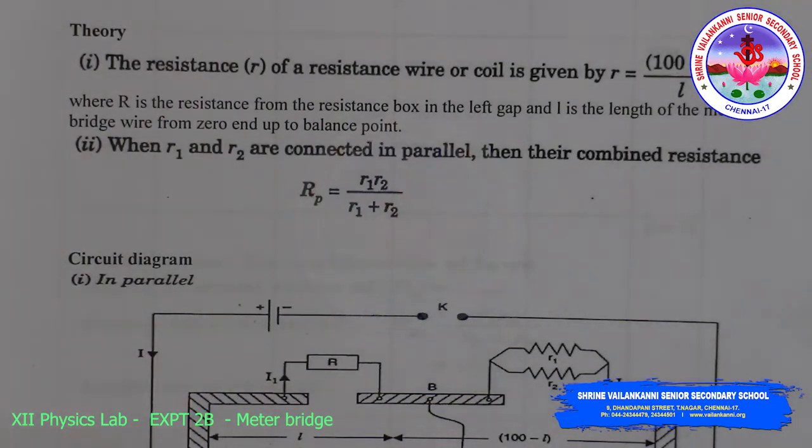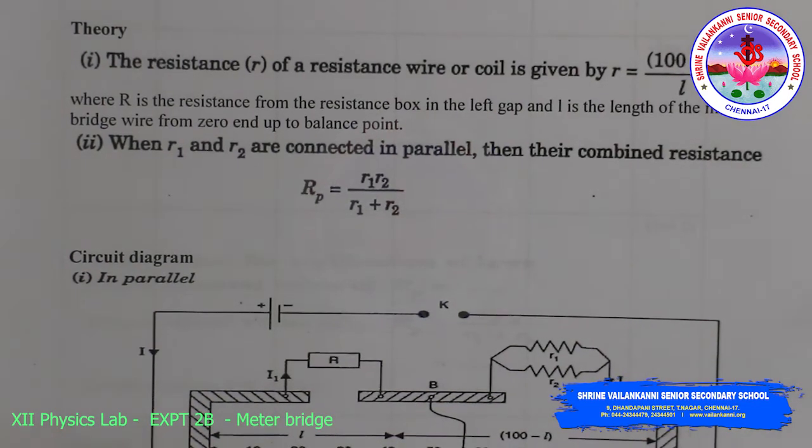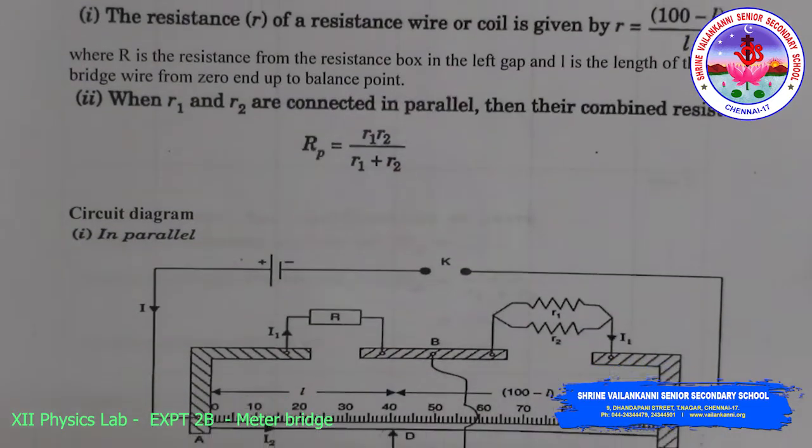When R1 and R2 are connected in parallel, then their combined resistance Rp equals R1 R2 by R1 plus R2. The circuit diagram.